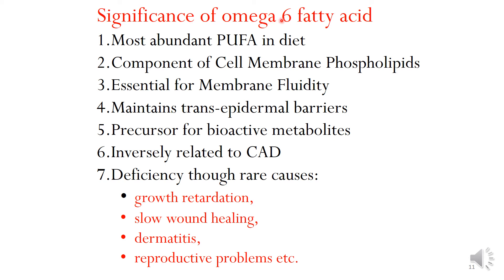Now we come to the significance of omega-6 fatty acids. These are the most abundant in the diet. They are a component of cell membrane phospholipids and are essential for membrane fluidity. They maintain transepidermal barriers and are precursors for various bioactive metabolites. They are inversely related to coronary artery disease. Deficiency signs are rare and include growth retardation, slow wound healing, dermatitis, and reproductive problems.